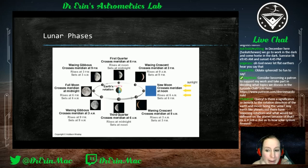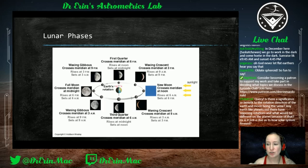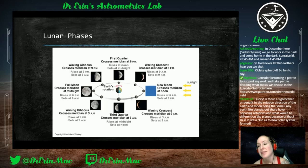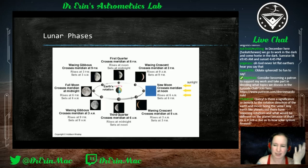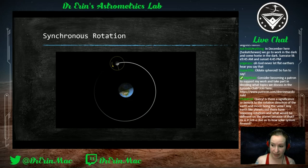Question about rotation direction: when bodies all orbit in the same direction and in the same plane, that's a good indicator they all formed at the same time. If something is rotating in an opposite direction or not in the same orbital plane, that's a good indication it was captured or formed separately by some other phenomenon. We'll get more into solar system formation later.